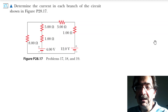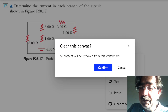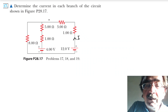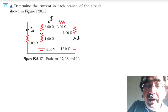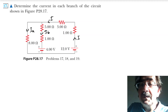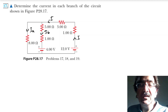We know that if current i is passing through this circuit, then it will be divided into two parts. If I say this is ia and this is ib, then this current ia will be divided into two currents ia and ib.